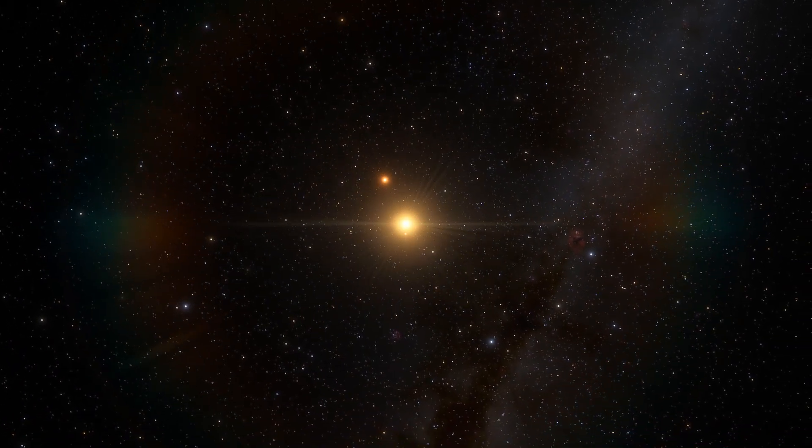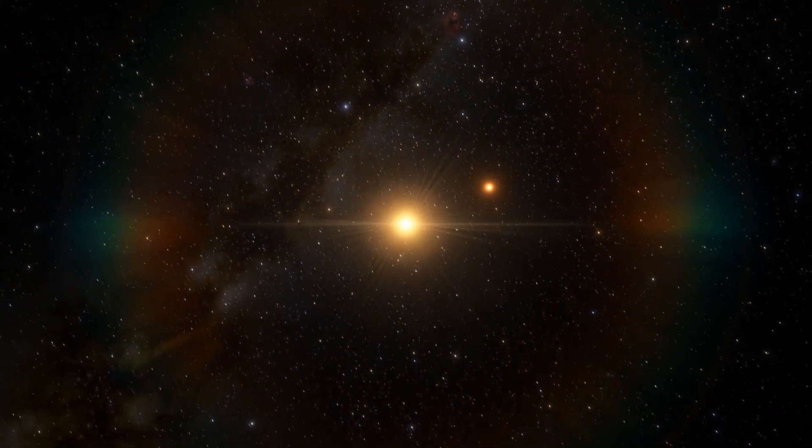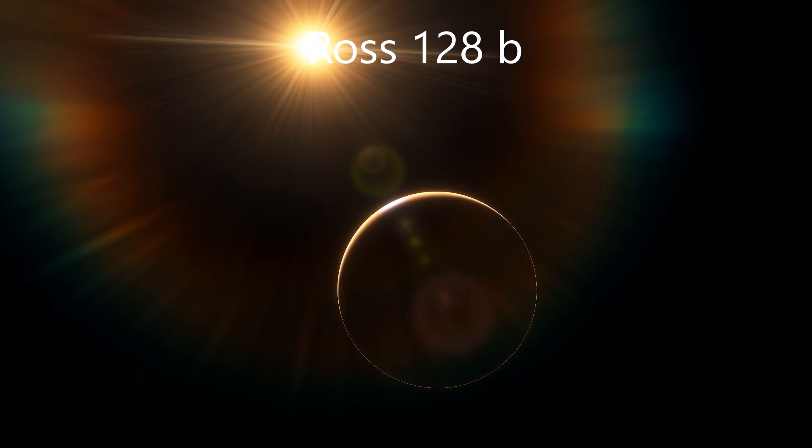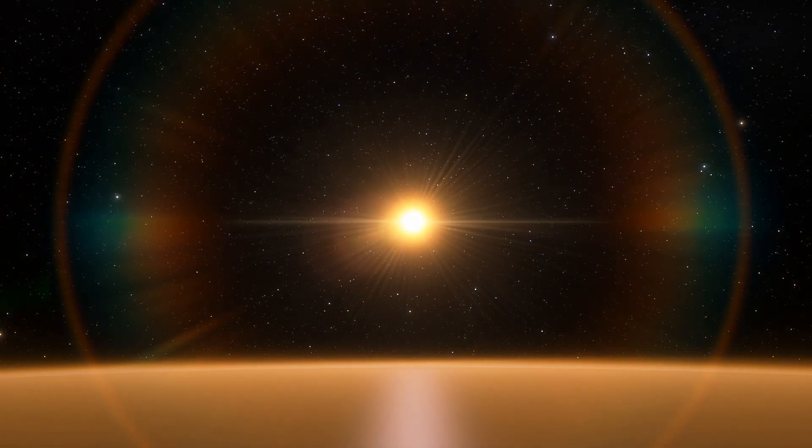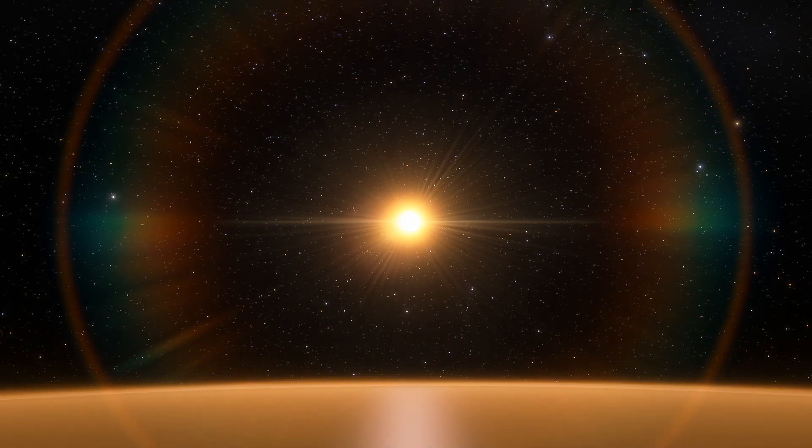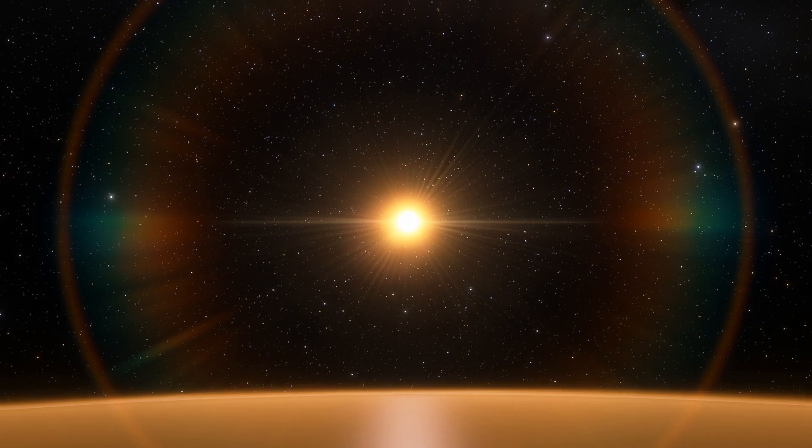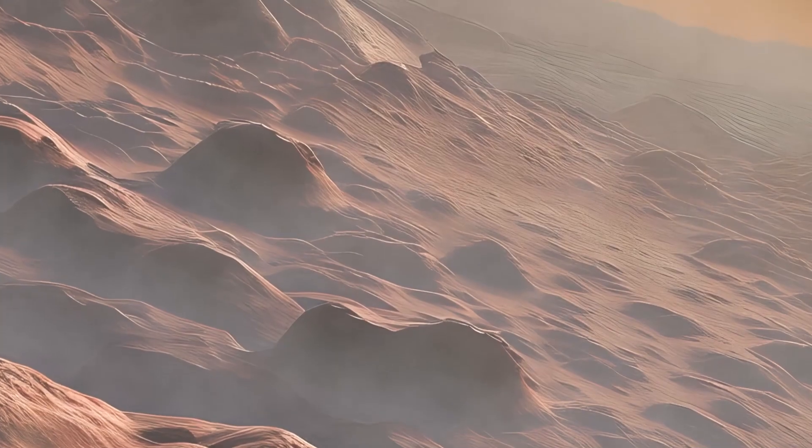This star is notable for the fact that it hosts one of the closest Earth-like exoplanets to us, located in the habitable zone. The exoplanet Ross 128b was discovered in 2017 by the Doppler method at the Chilean observatory La Silla. The discoverers of Ross 128b believe that it is the most temperate planet known at the moment, due to its mass, temperature and location around a fairly calm parent star.